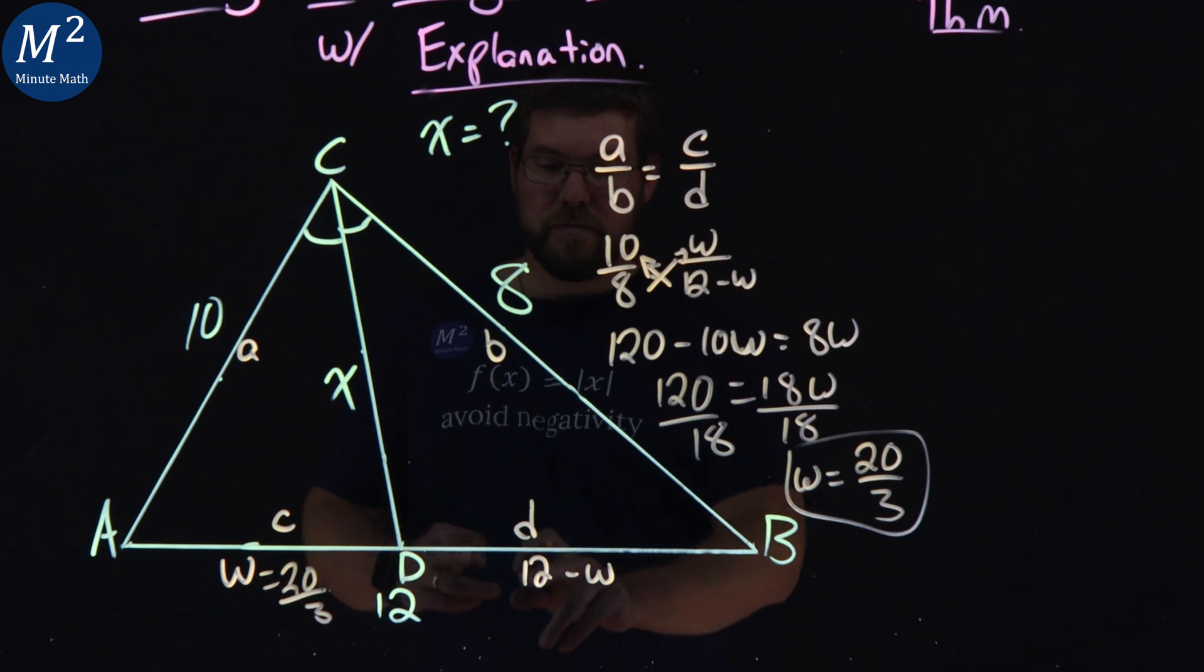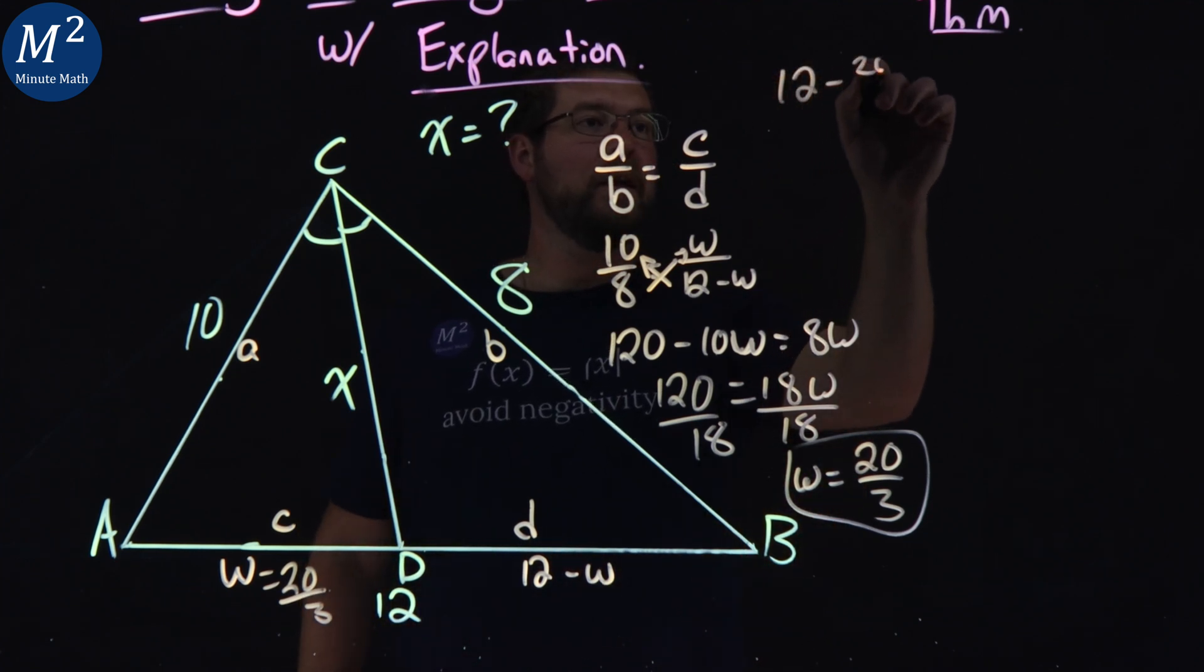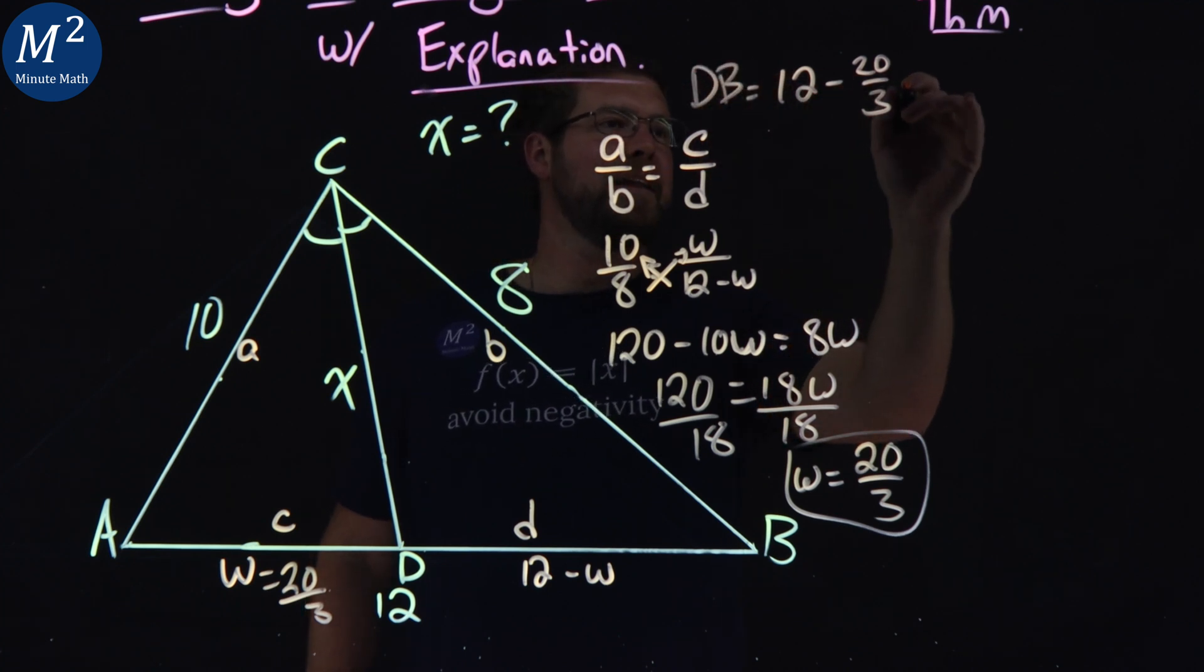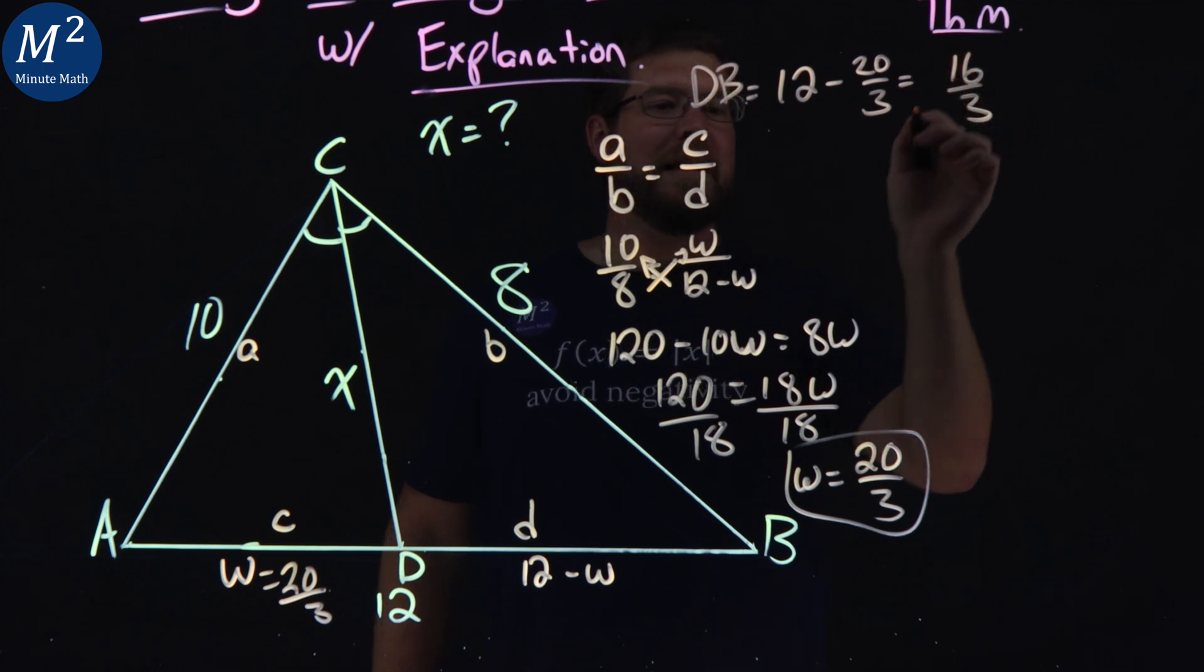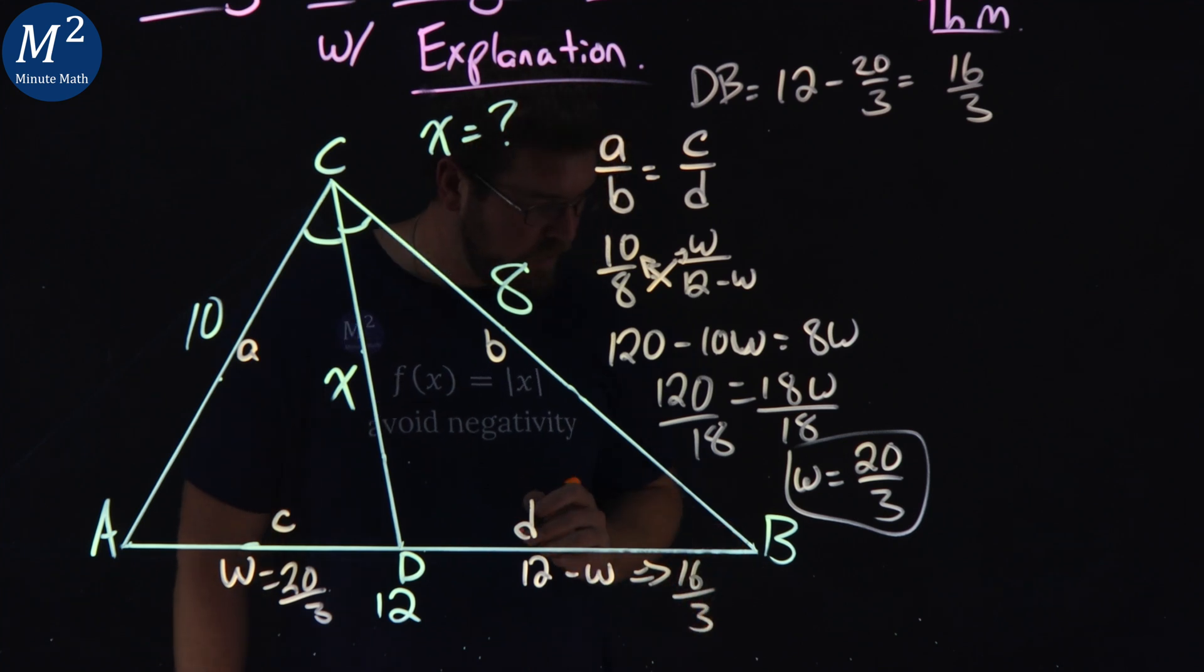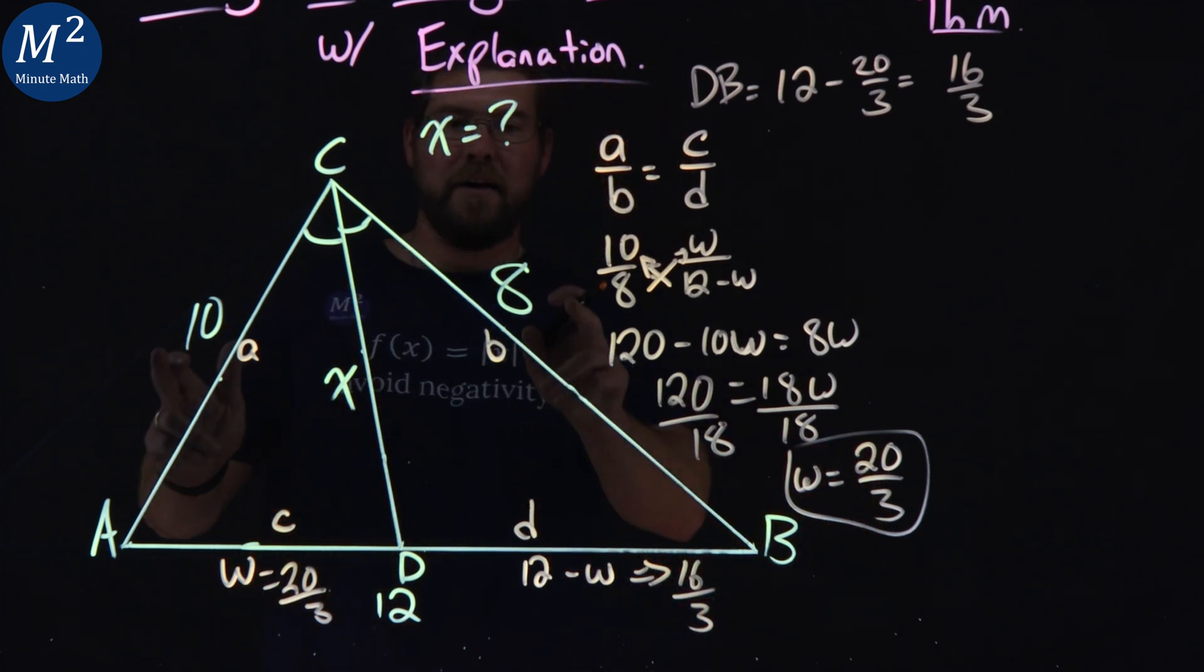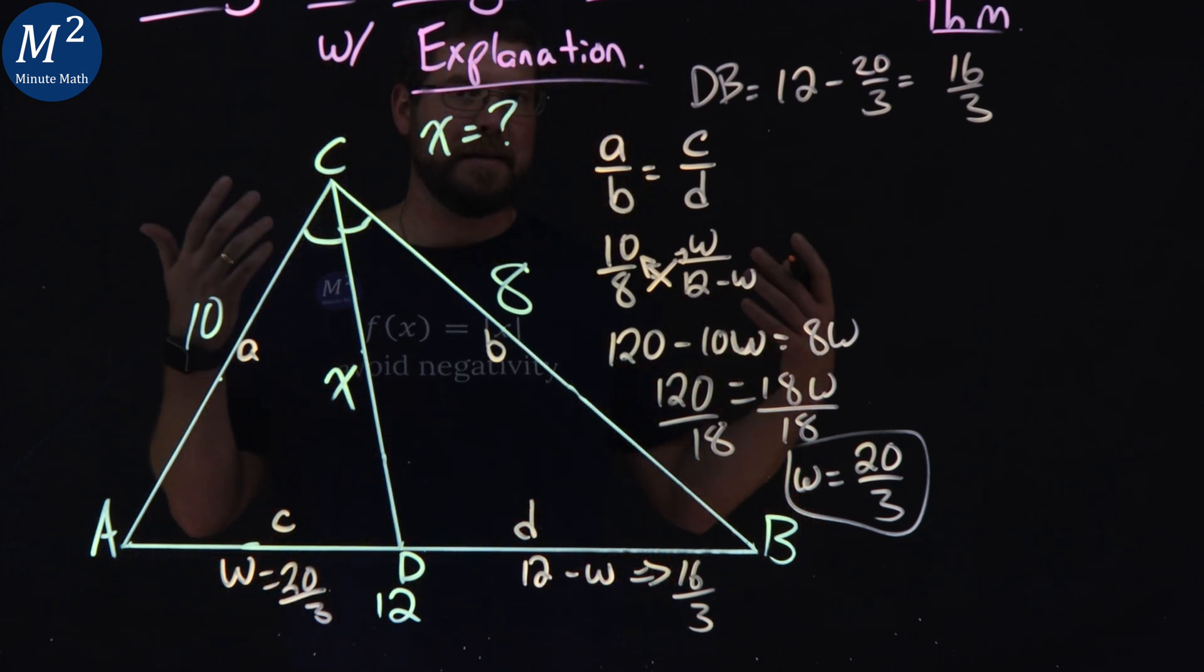And then if we want to find DB, that length, we have 12 minus 20 over 3, which is the length of DB. And I did that work for you right here, and that is 16 over 3 when it's simplified. So here is 16 over 3. So great, that gives you information here. We have all side lengths, and now we can apply what's called Stewart's theorem.